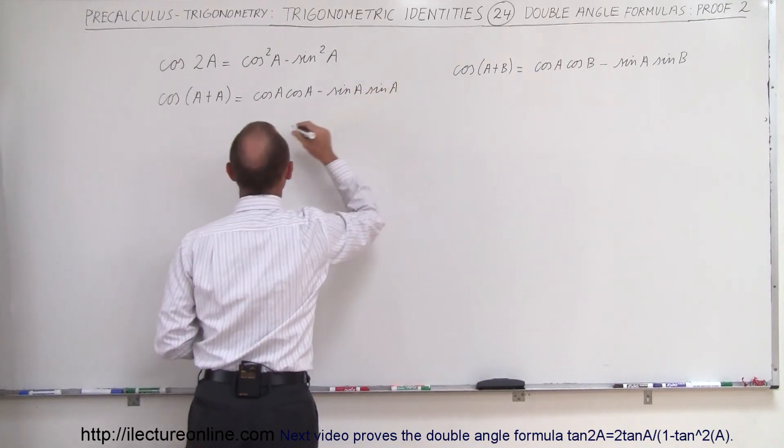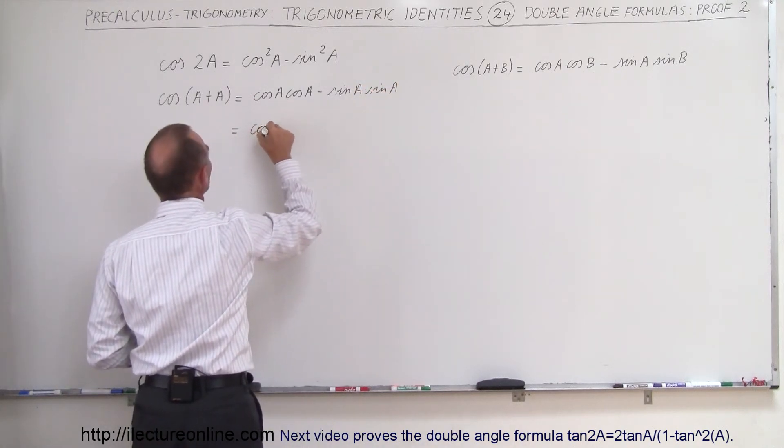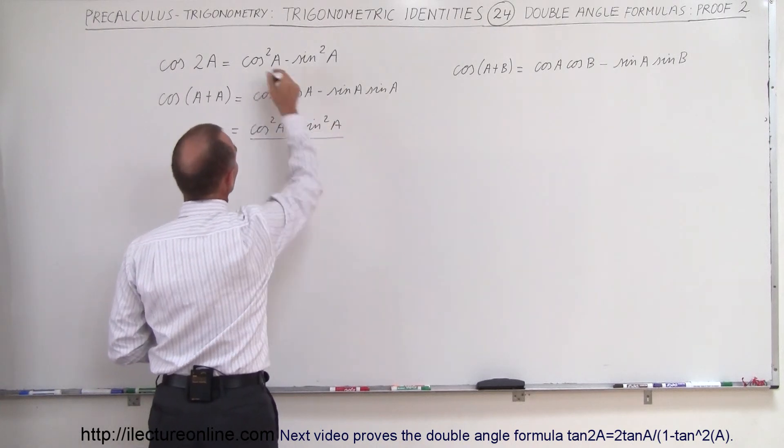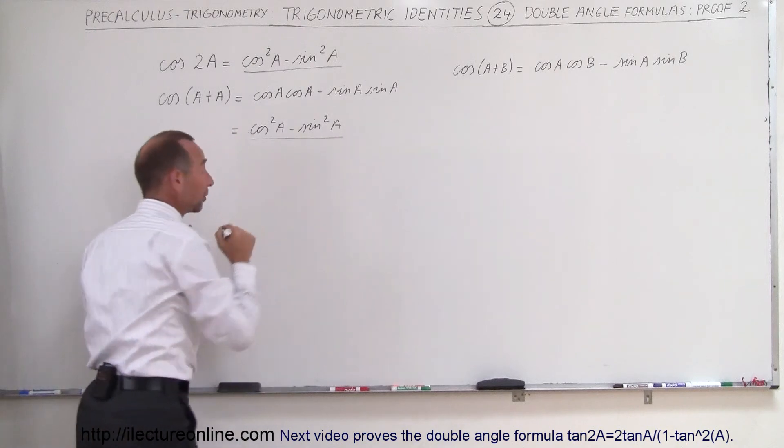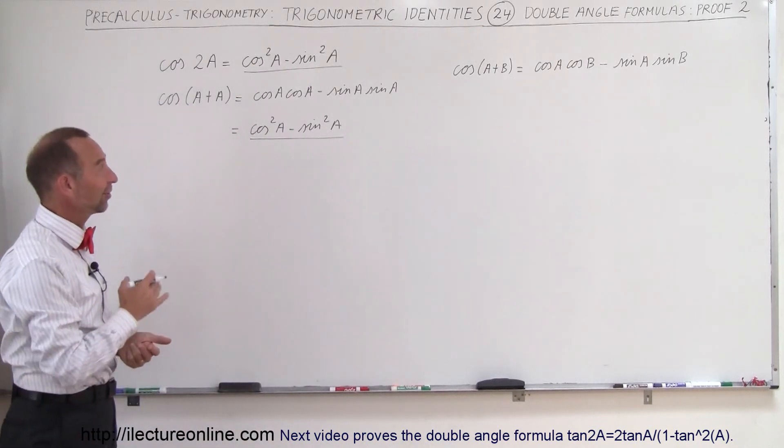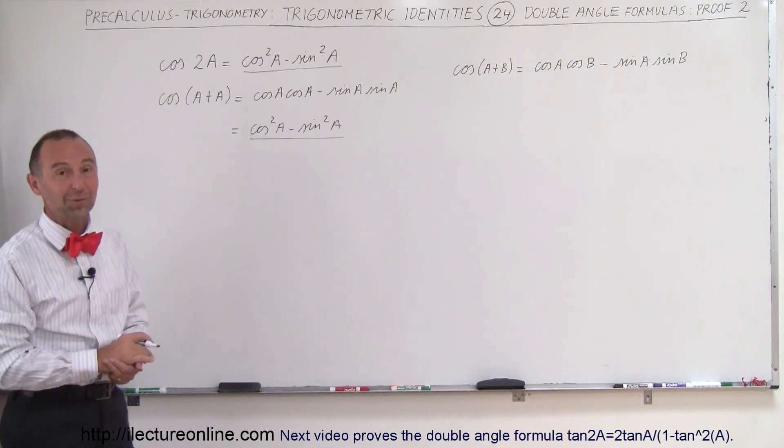And of course, that then simplifies to the cosine squared of A minus the sine squared of A. And you can see that's exactly what we have over there. So we know that the cosine of 2A is simply the cosine squared of A minus the sine squared of A. And that's how we prove that.